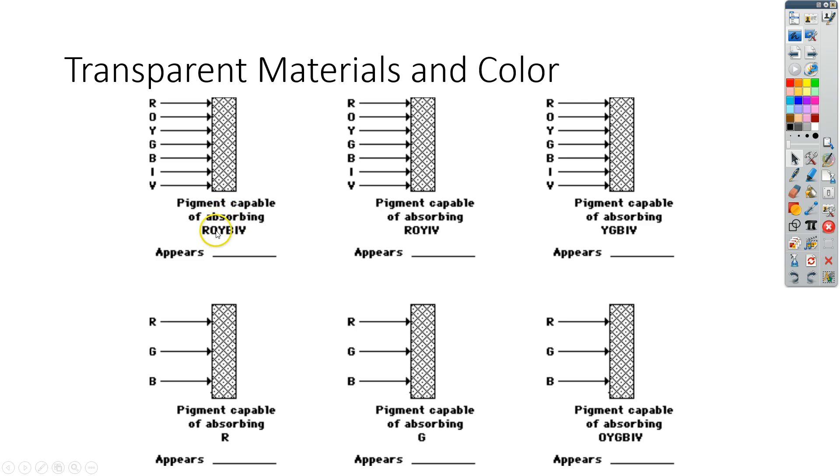The pigments in the piece of glass are able to absorb red, orange, yellow, blue, indigo, and violet. So those things are not allowed to go through. So what we can do is we can cross those letters off.